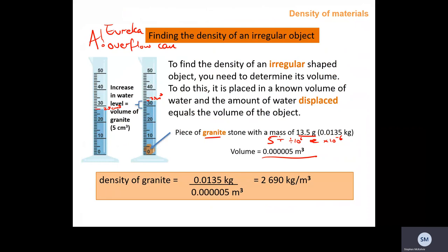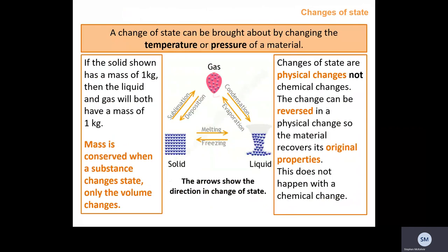To find density: find the mass using a balance, find the volume using either an overflow can or a graduated cylinder, then calculate density. A change of state can be brought about by changing the temperature or pressure of a material. Importantly, the law of conservation of mass applies: 1 kilogram of ice is 1 kilogram of water and 1 kilogram of steam. Mass is conserved — only the volume changes. These are physical changes; the change can be reversed.